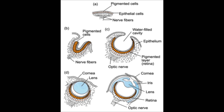After it meets the surface ectoderm, the primary optic vesicle invaginates to form the optic cup. The line of the invagination remains open for some time as the embryonic fissure. The inner layer of the cup forms the main structures of the retina, the nerve fibers from which eventually grow backward towards the brain.